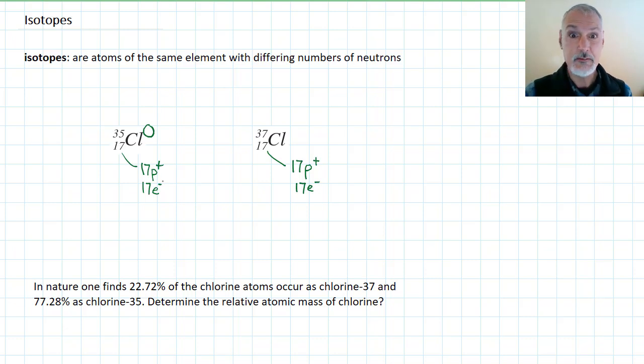Now being that they have the same number of protons and the same number of electrons, these two species are going to have exactly the same chemical properties. Having the same chemical properties means that they will react the same way.